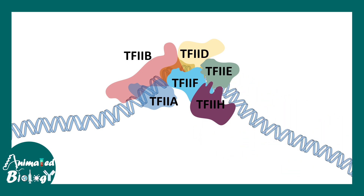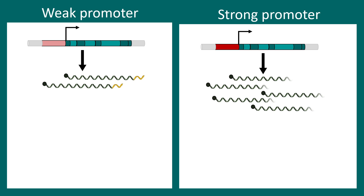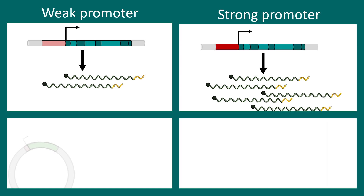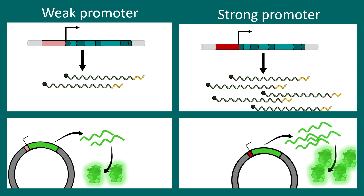There are strong promoters and weak promoters. The readout is straightforward: the amount of RNA produced. A strong promoter produces more rounds of transcription and thus more mRNA. Reporter gene assays can be used, where a reporter gene such as a GFP coding sequence is placed under a particular promoter. For example, if one promoter produces two molecules of GFP and another produces four, the second is clearly a stronger promoter, as shown by fluorescence intensity.